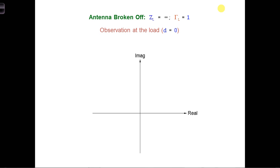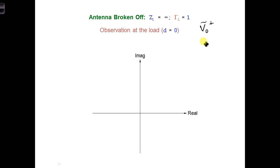To get a feel for how the voltage changes over the length of the transmission line, let's simultaneously visualize both voltage phasors, V0 plus and also V0 minus, at a few key distances from the load.